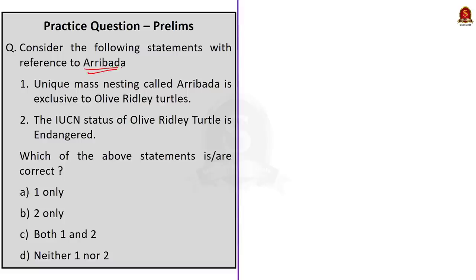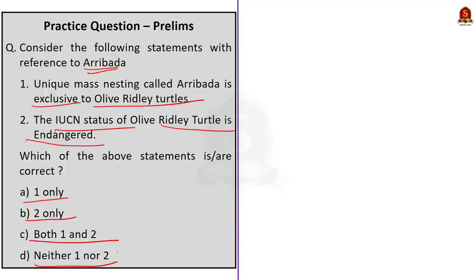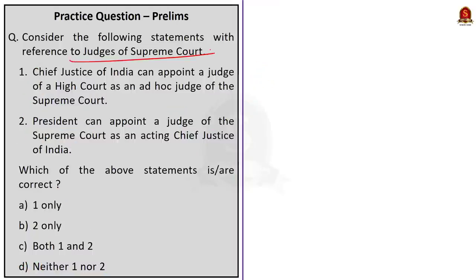Question 2 on Aribada: Statement 1 — Aribada is exclusive to olive ridley turtles — is incorrect, as both olive ridley and Kemp's ridley turtles are known for Aribada. Statement 2 — the IUCN status of olive ridley turtle is Endangered — is incorrect; it is listed as Vulnerable. The correct answer is option D: neither one nor two.